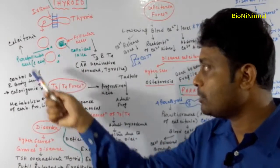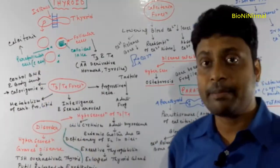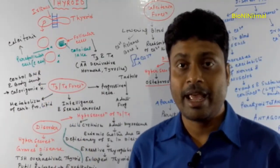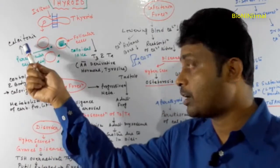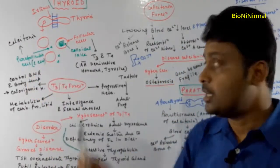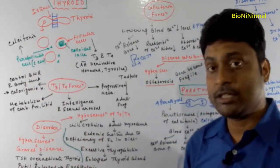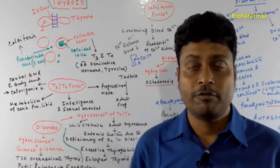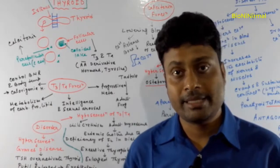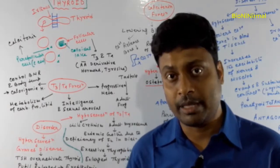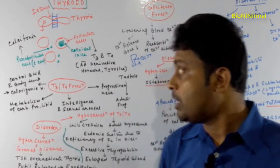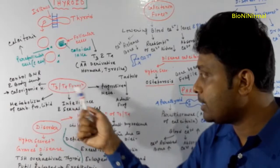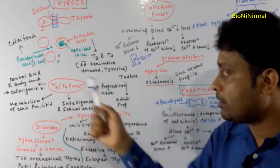In between the follicles there is a special kind of cell called the parafollicular cell, or the C cell. This is responsible for the secretion of a hormone called calcitonin, which is very crucial for maintaining the blood calcium and phosphorus level.